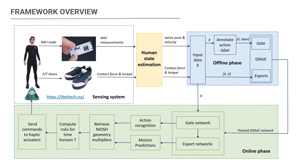Action recognition and motion prediction are achieved by a learning-based method called Guided Mixture of Experts, which is trained offline and can be inferred online. At the online inference stage, the Guided Mixture of Experts receives data from the human state estimation module and predicts both action recognition and future motions.